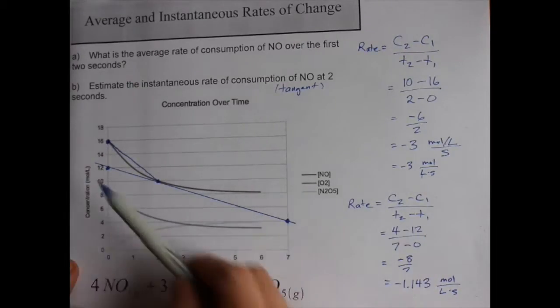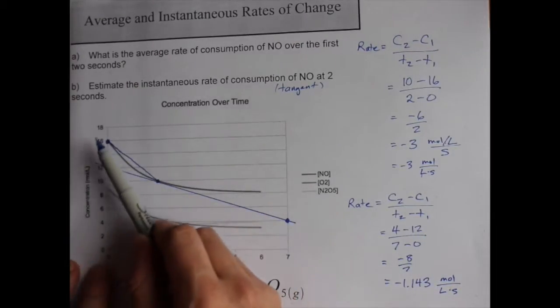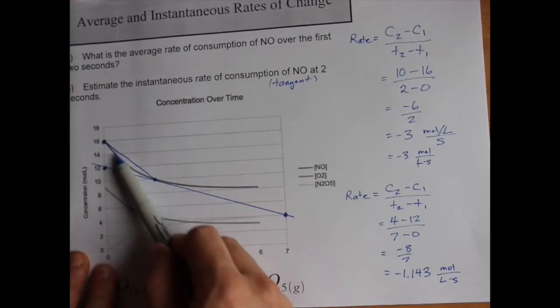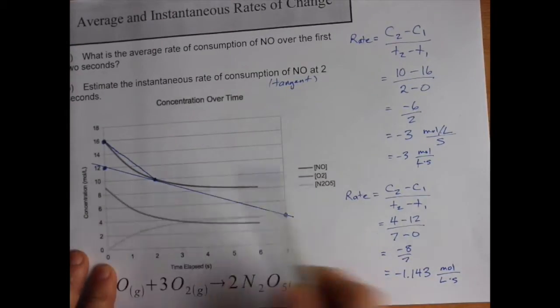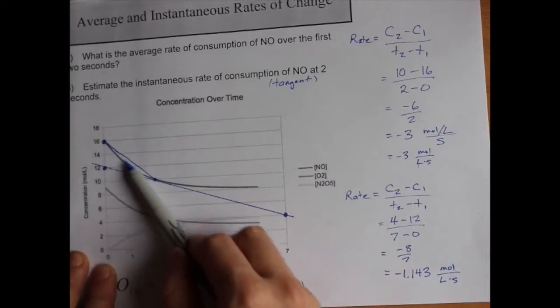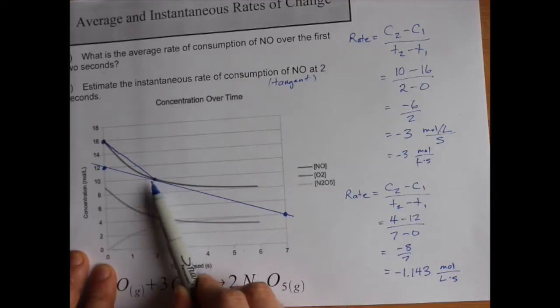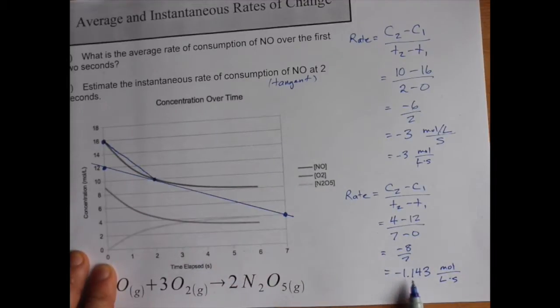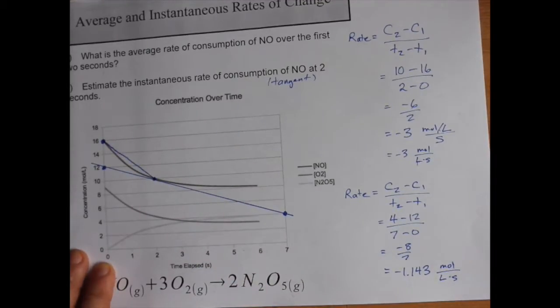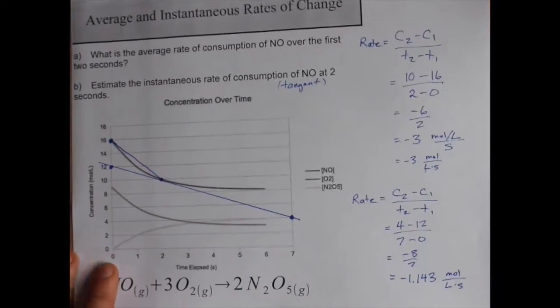The reason for that is that chemical reactions often go fastest at the beginning and then they start to slow down. So on average in this area, it was going down 3 moles per liter per second. But by the time you actually got to 2, it had slowed all the way down to minus 1.1 moles per liter per second.